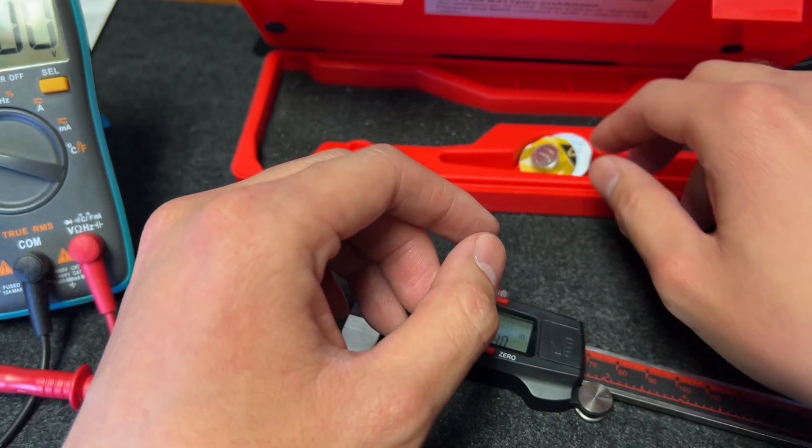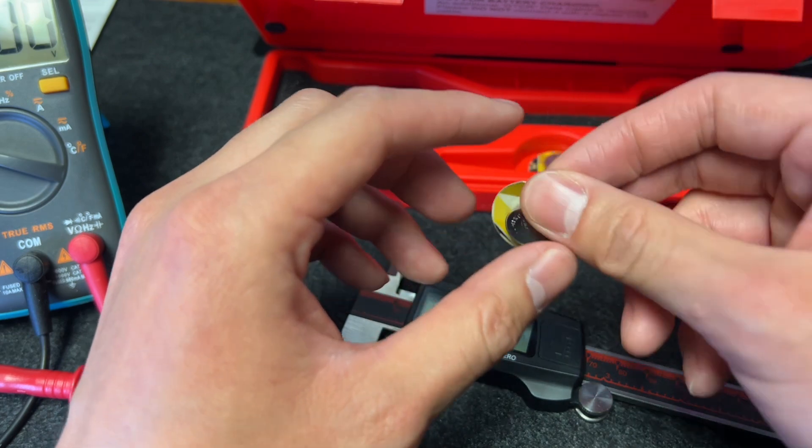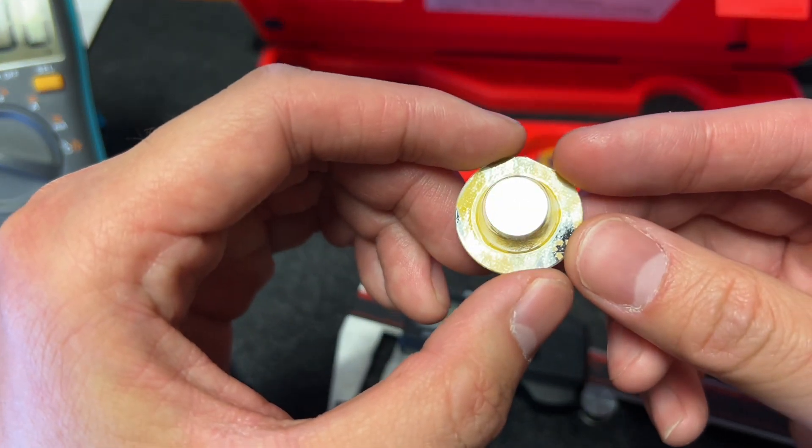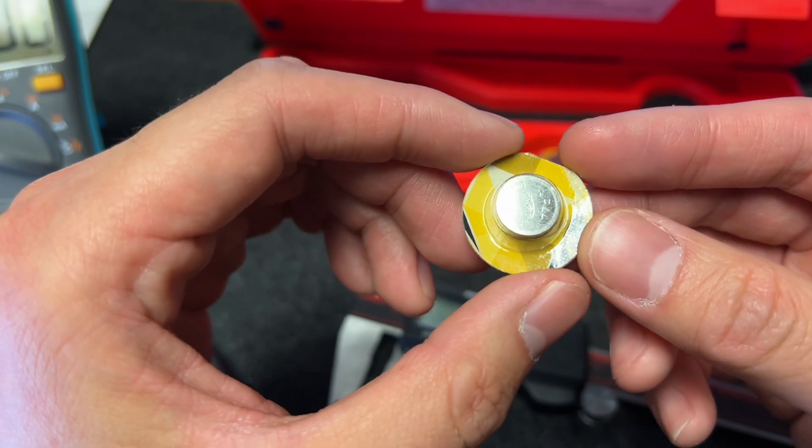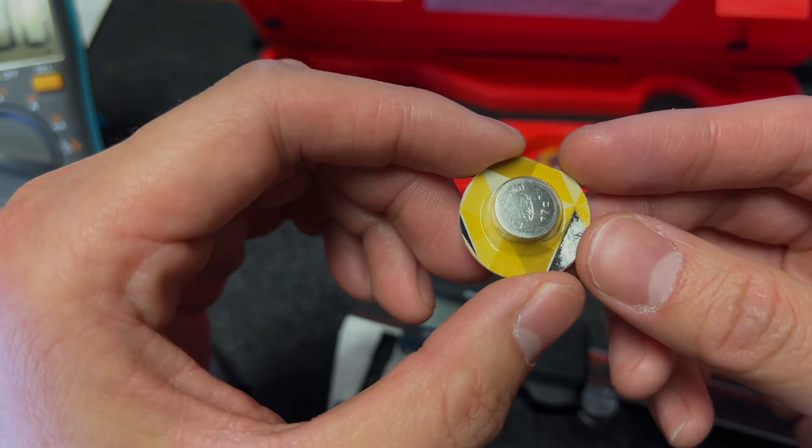Usually the LR44 battery can last about 8 months after installation. So if you're not going to use the caliper for a long time, just take the battery out to save the battery life.